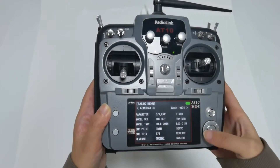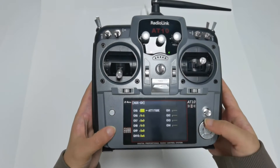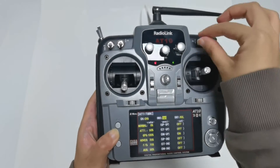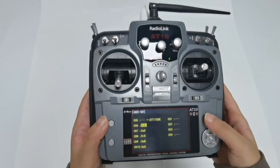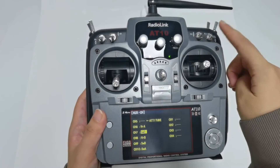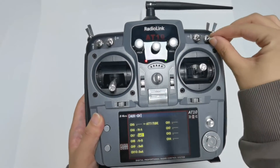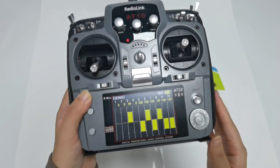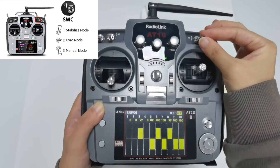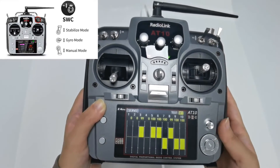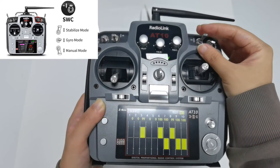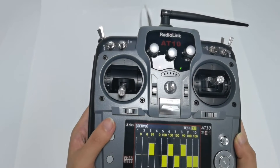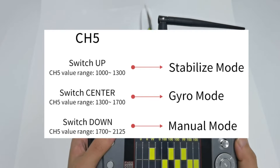Then go to aux channel and select a 3-position switch to channel 5. I select switch C. The SU-27 has 3 flight modes controlled by switch C. Push switch C up for stabilized mode, push switch C to the center for general mode, and push switch C down for manual mode. When using other brand transmitters, please refer to the picture on the screen to switch flight modes.